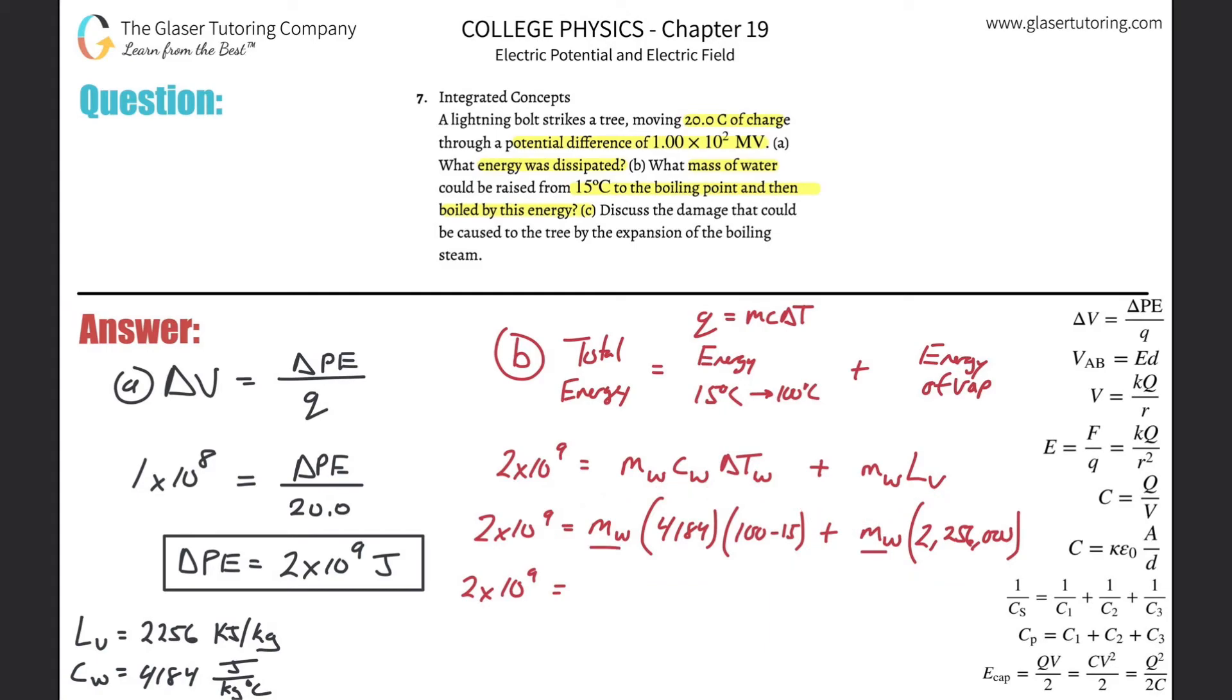mass of water in them, so I'm just going to combine it all at once. I'm going to take 4,184, multiply it by 85, and then add to that 2,256,000. And I get a value here of about 2.61 times 10 to the 6, and